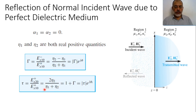And in this case, the value of tau — if we are going from free space to a dielectric media — tau would be less than one.